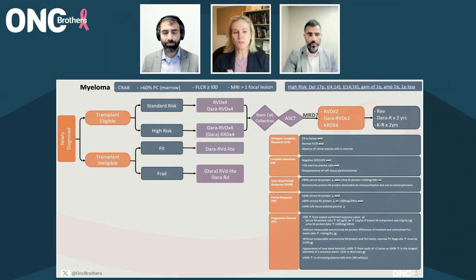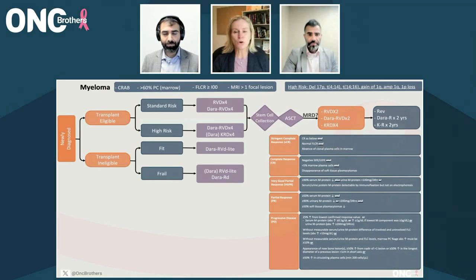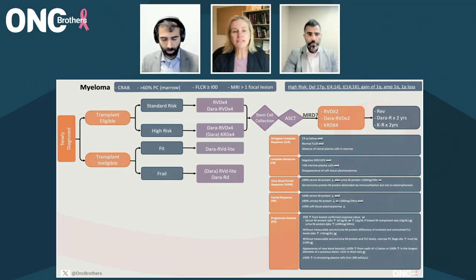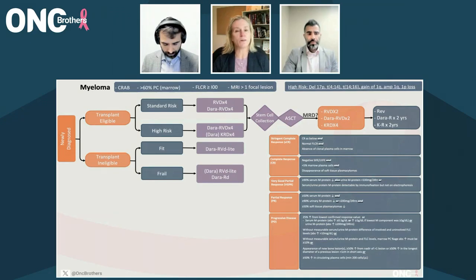That's where my fork in the road is: someone with high-risk features who is transplant eligible, I will choose carfilzomib. Those are your 17p-deleted patients, your t(4;14)s, t(14;20)s, t(14;16)s, 1q amplifications — those are the patients we really want to pursue with carfilzomib. I do not do echocardiograms across the board for all patients starting carfilzomib; if there's something in their history that concerns me, it's never wrong to do. The single most important thing when starting carfilzomib is to get blood pressure under control, because elevation of systemic blood pressure is one of the most common things we see.